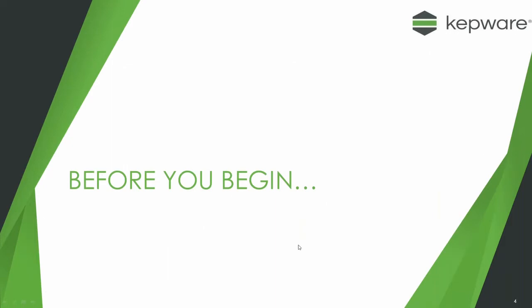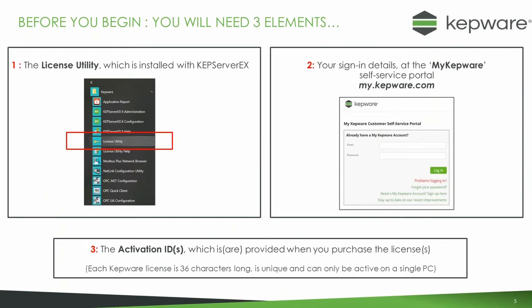Before you begin, there are three things you need to get sorted. The first is the license utility software itself which you'll find has been installed when you download and install the KepServer software. The second is the MyKepware sign-in which you use to download the KepServer software in the first place. The third is the activation ID or IDs which are unique 36-character-long strings for each license. Each one is unique and can only be used once on a particular PC.